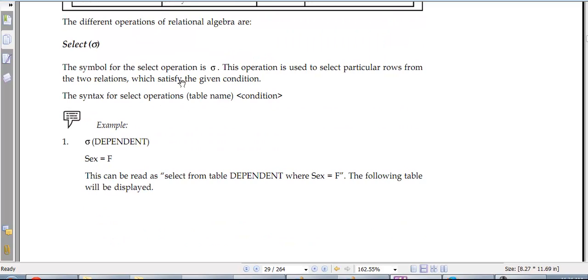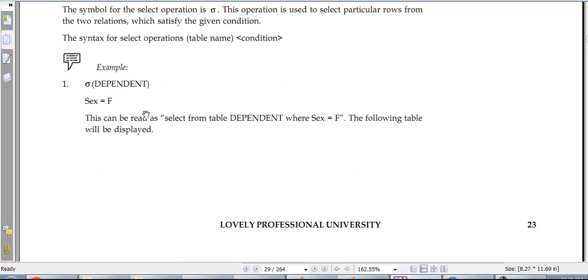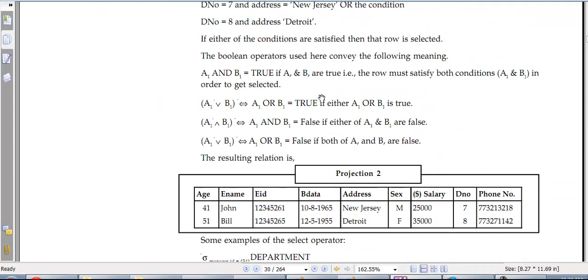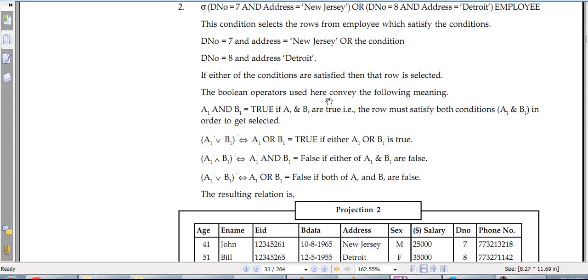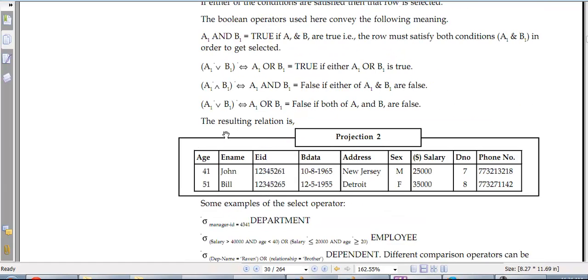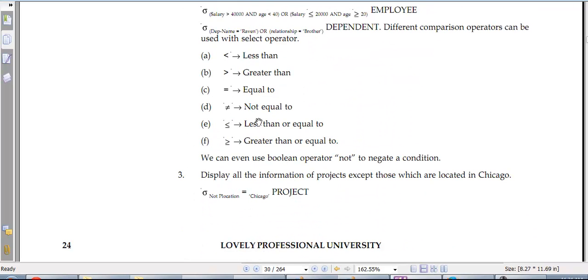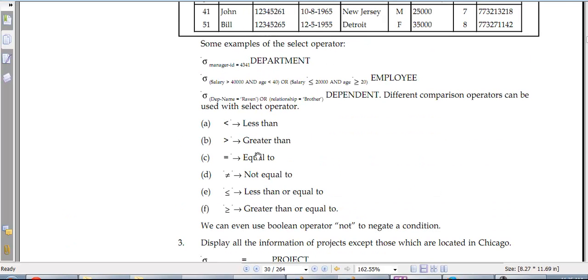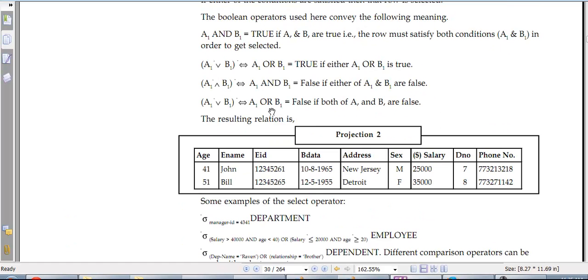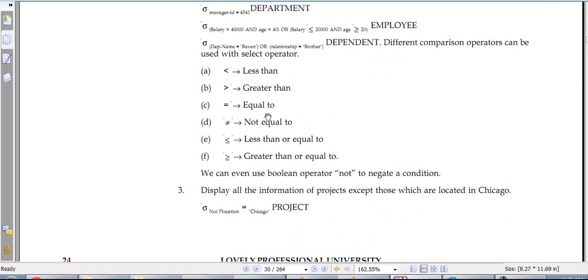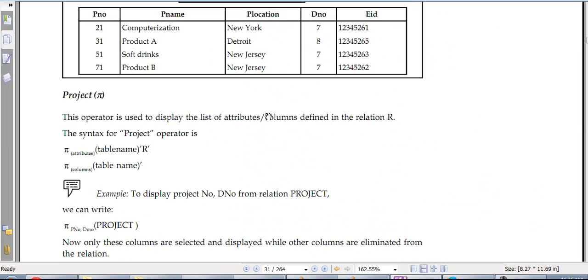Then you have select with this symbol, and this is used to select particular rows from a relation. The syntax is table name with condition. So sigma dependent sex equals female and you will get the following table. You can add this with the and function or the or function. So this would happen when both of them are true, and you can also use the same select with greater than or smaller than. Select manager equals something from department. So that would still do it.